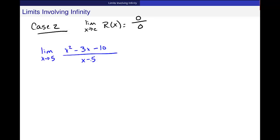Now, if I just go ahead and try and plug in, I get 5 squared minus 3 times 5 minus 10 over 5 minus 5. I get 25 minus 15 minus 10 over 0, which is 0 over 0.